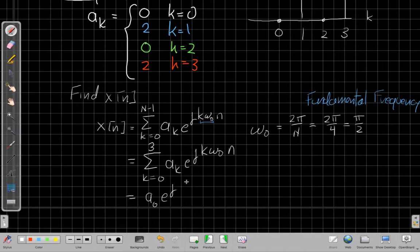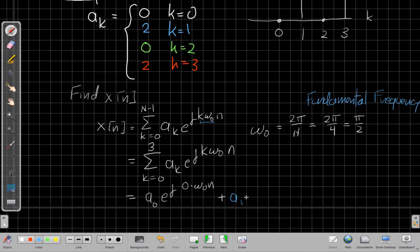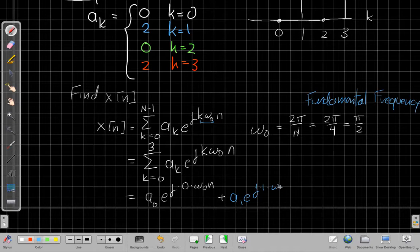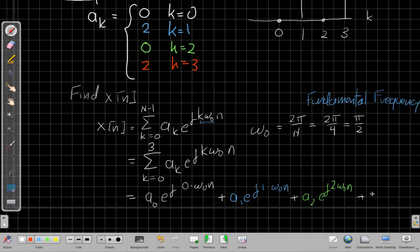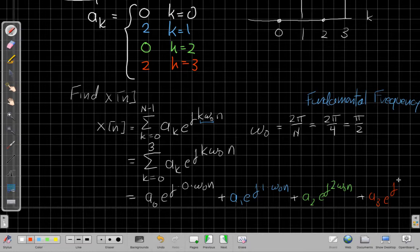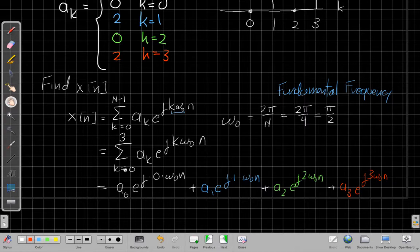So I get one term as a sub 0, e to the j, k is now 0 times omega 0 n, plus when k equals 1, I'd have a sub 1, e to the j 1 times omega 0 n, plus the k equals 2 term. When k is 2, I have a sub 2, e to the j 2 omega 0 n, plus the k equals 3 term, which would be a sub 3, e to the j 3 omega 0 n. So this is unpacking this sum and saying it's four terms.